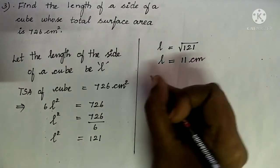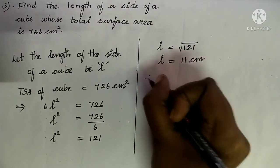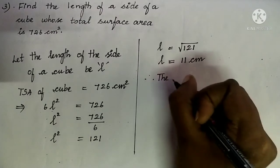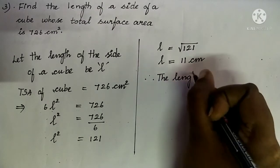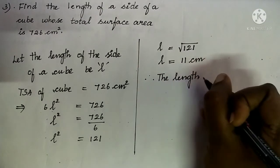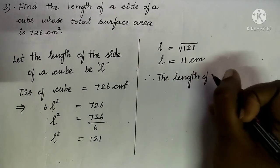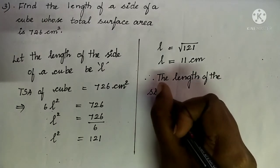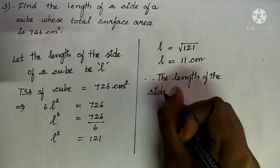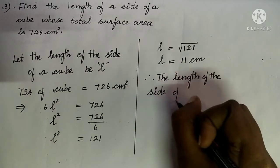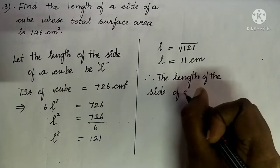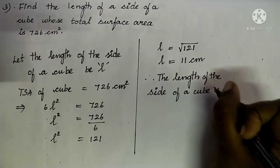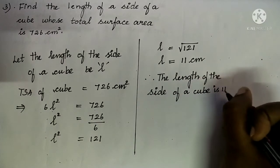Since our total surface area is given in cm², our length will be in cm. So our length is 11 cm. Therefore, the length of the side of a cube is 11 cm.